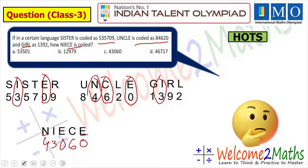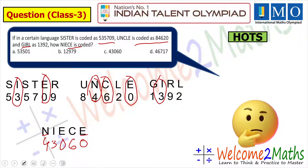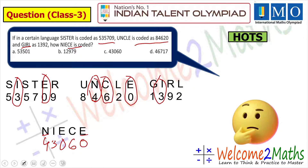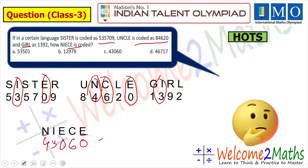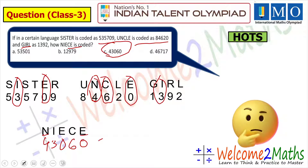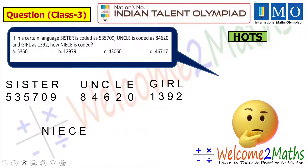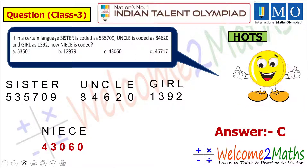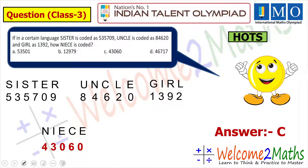So NIECE is coded as 4 3 0 6 0. Looking at our four options, the correct one is option C, which shows 43060. So our answer is 43060, option C.